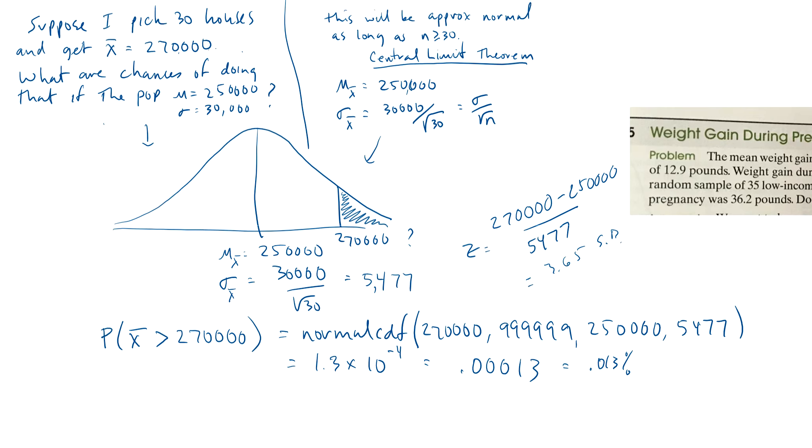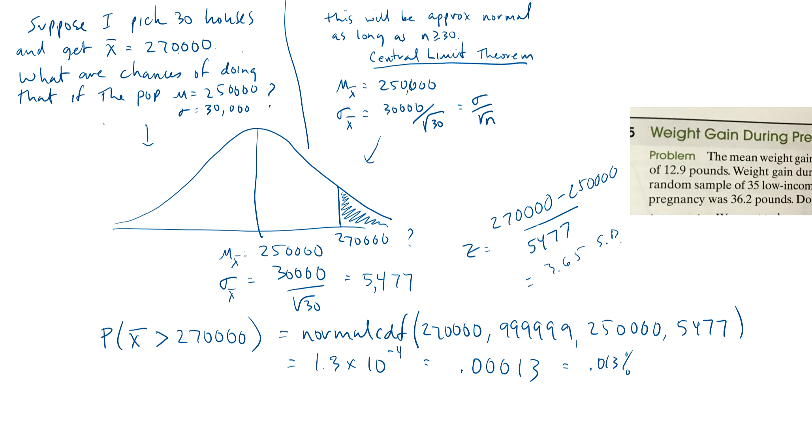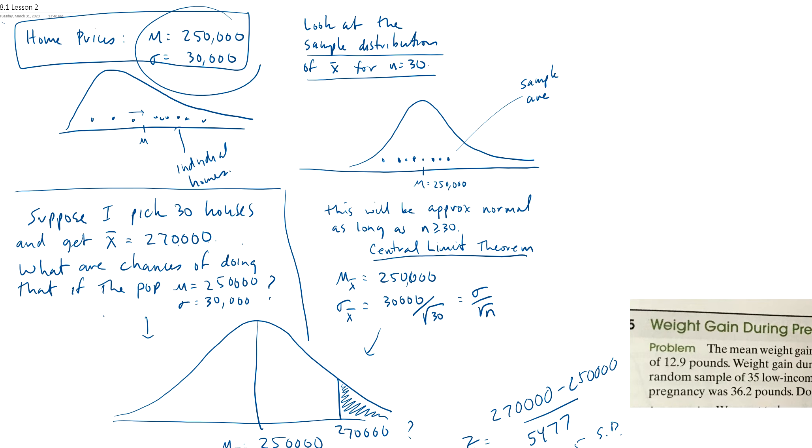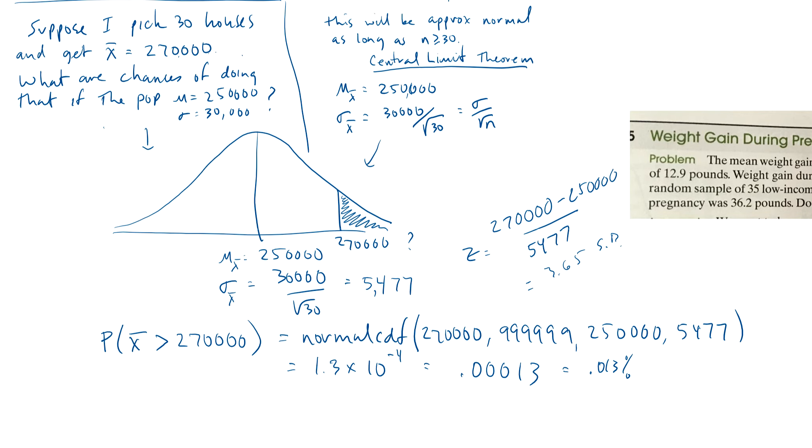So, let's go back to the question that we asked. We said, if I pick 30 houses and get 270,000, what are the chances of doing that? Well, if I assume the original population was this right here, then my sample distribution, this is my distribution of all samples, where n is 30, looks like this. It's normal by what's called the central limit theorem. So now this is normal. I can answer that question. I can say, oh, the chance that I get 270,000 or bigger is tiny. So where are we heading with this? Is this likely to happen? And the answer is, not likely.